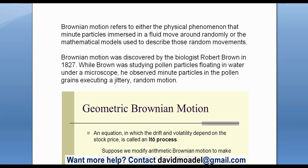Not just stocks — options, cryptocurrencies, Forex, commodities, whatever it is, it all applies. So what is Brownian Motion? It refers to either the physical phenomenon that minute little particles immersed in a fluid move around randomly, like those pictures we just saw. Or for math people, it's the mathematical models used to describe those random movements.